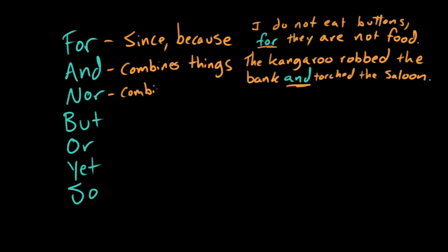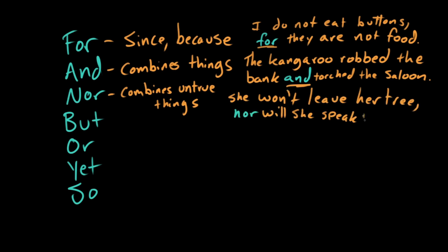Nor is similar to and, but we use it to combine untrue things. We use it to express negation. So if I were going to talk about an angry tree spirit, for example, just to pull an example out of a hat, I could say she won't leave her tree, nor will she speak with humans.